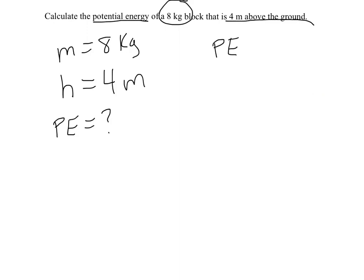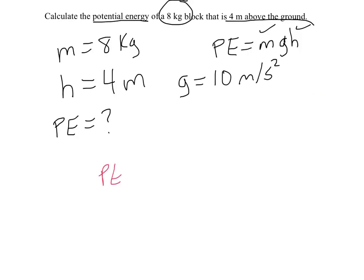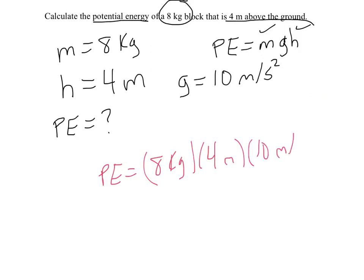The formula for potential energy is mgh. We know mass, we know height, and we need to know g. It doesn't say it in the problem, but you can usually assume we're talking about Earth. On Earth, g is 10 meters per second squared. So now it's just a matter of plugging in these numbers: potential energy equals 8 kilograms times 4 meters times 10 meters per second squared.